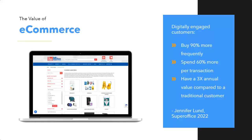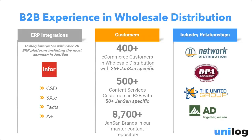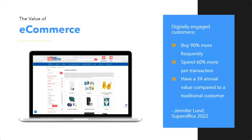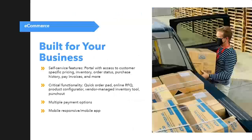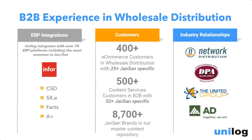From the Infor side, Infor is probably the ERP we support the most. We support the Infor suite of products such as CloudSuite Distribution, SXE, FACS, A+. We also work with network distribution, DPA, and United Group. We have the self-service features that expose all that customer data — pricing, inventory, orders, purchase history, and the ability to pay invoices via ACH. Customers can place orders via credit card, or if they're on account, by purchase order.